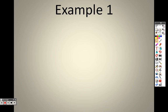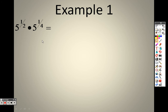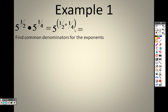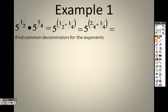Let's take a look at example one. We have two bases that are the same, so when they're side by side I need to add the exponents. I have one-half and one-fourth, but I can't add those unless they have the same denominator, so I need to find a common denominator. I multiply the top and bottom of one-half by two, giving me two-fourths. So it's two-fourths plus one-fourth, which is 5 to the three-fourths.